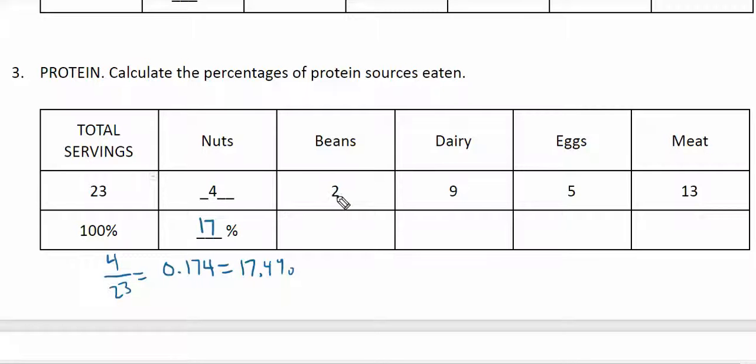For beans, we have 2 servings compared to 4, so it's going to be half of that. We should really take half of 17.4. Otherwise, we'll get what we call double rounding error. So that would be 8.7%, which would be 9%.